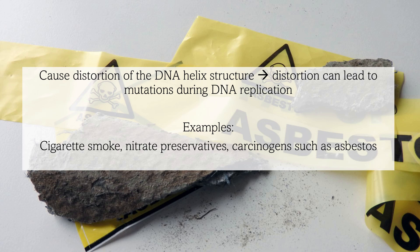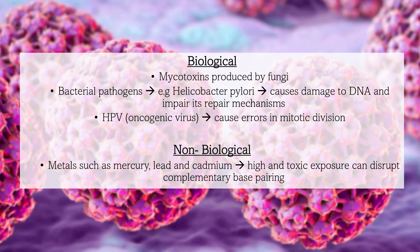Examples of chemical mutagens include cigarette smoke, nitrate preservatives, and asbestos, which is a carcinogen. Naturally occurring mutagens can be biological or non-biological. Biological mutagens include mycotoxins produced by fungi and bacterial infections like Helicobacter pylori that can damage DNA and impair its repair mechanisms. Oncogenic viruses, such as certain strains of HPV, can cause errors in mitotic division, leading to uncontrollable cell division and cancer. Non-biological mutagens include metals such as mercury, lead, and cadmium. Exposure to high and toxic levels of these metals can disrupt the complementary pairing of DNA bases.